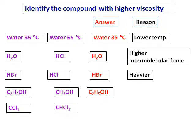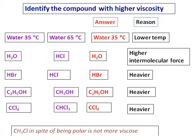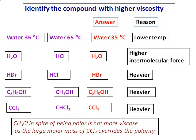Then ethyl alcohol and methyl alcohol. Ethyl alcohol will have a higher viscosity because it is heavier again. And between CCl4 and CHCl3, CCl4 is non-polar, CHCl3 is polar. We would have expected CHCl3 because of the intermolecular forces to have a higher viscosity. But CCl4, the weight is much more as compared to CHCl3. The one chlorine has a lot of its weight, and hence CCl4 has a higher viscosity because the larger molar mass of CCl4 overrides the polarity.